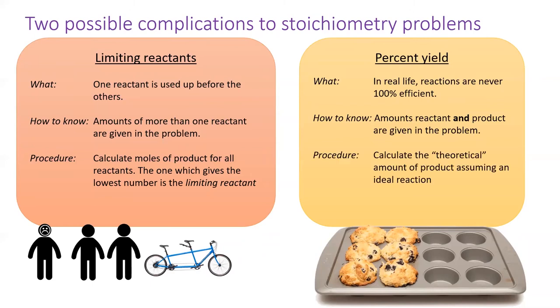To calculate the percent yield, perform the stoichiometry problem as you would normally to calculate the theoretical yield. Then take the amount of product given in the equation, which is the actual yield, and divide it by the theoretical yield to calculate the percent yield.